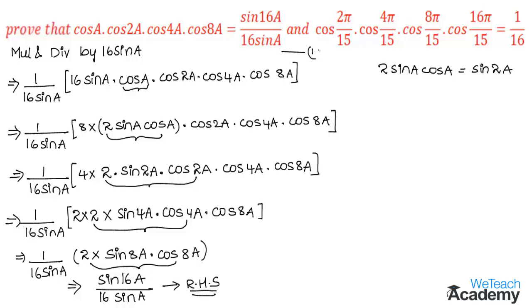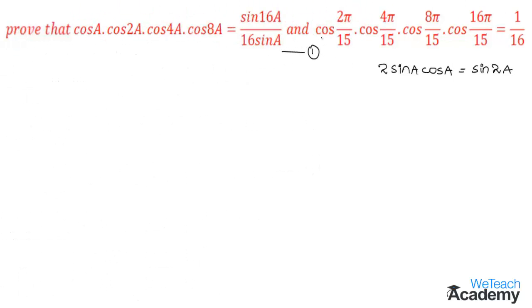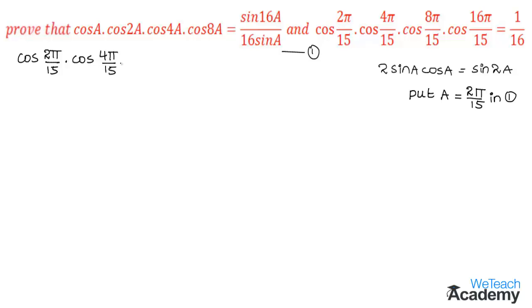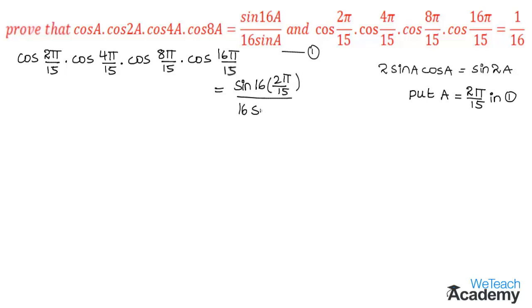Now let us proceed and prove the value for cos(2π/15) · cos(4π/15) · cos(8π/15) · cos(16π/15) = 1/16. In order to prove, let us substitute a = 2π/15 in equation 1. By substituting, we get cos(2π/15) · cos(4π/15) · cos(8π/15) · cos(16π/15) on the LHS, and on the RHS sin(16 · 2π/15) / (16 · sin(2π/15)).